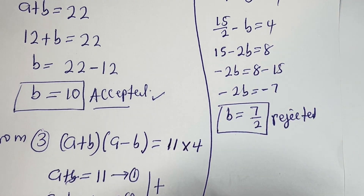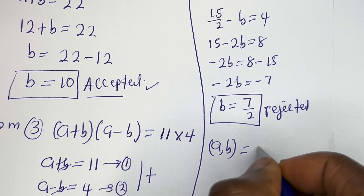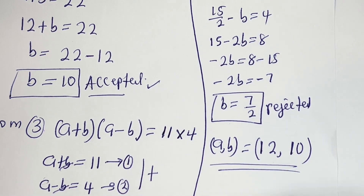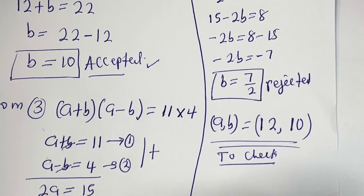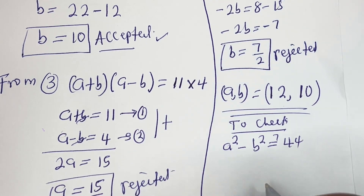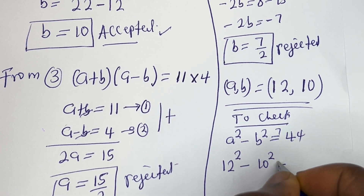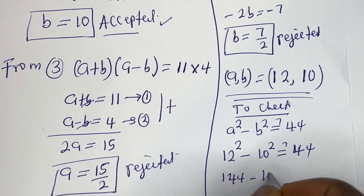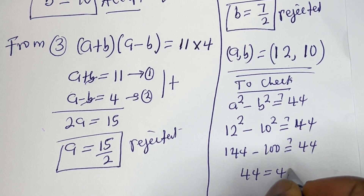Therefore, the only true solution we have is (a, b) = (12, 10). This is the final answer. Let's check: a² − b² must equal 44. So 12² − 10² = 144 − 100 = 44, which equals 44. This is true.